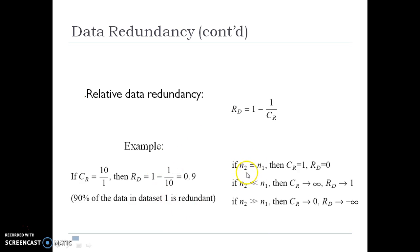If N2 equals N1, meaning both have the same number of bits, then redundancy is 0. Whereas if N2 is less than N1, the redundancy approaches 1. This is the calculation of data redundancy.